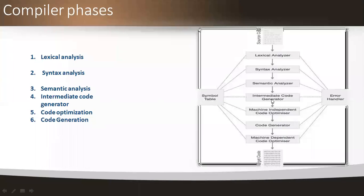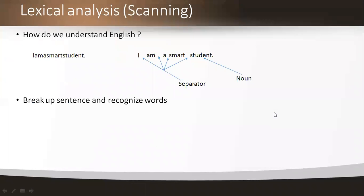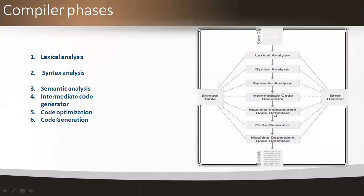The output of the intermediate code generator is taken as input to the code optimizer, and the output of the code optimizer is taken as input to the code generator. The output of the code generator is in the form of machine-dependent code, which is the target code — an executable object code.